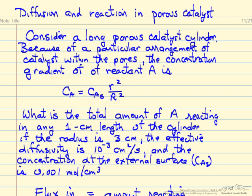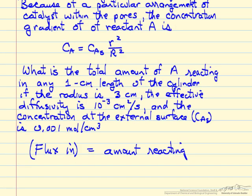The concentration CA = CAs(r/R)², where R is the actual radius of the cylinder. What we want to know is the total amount of A reacting in a 1cm length given the radius, the diffusivity, and the external concentration. The flux in times the area for 1cm gives the amount reacting.